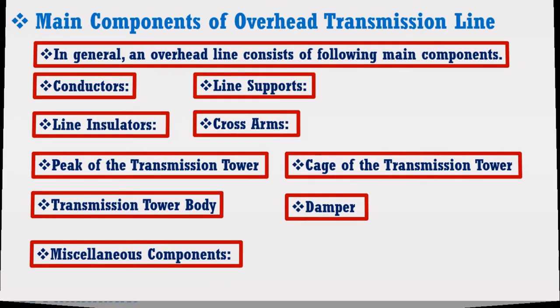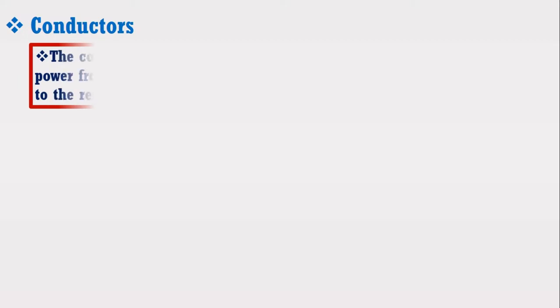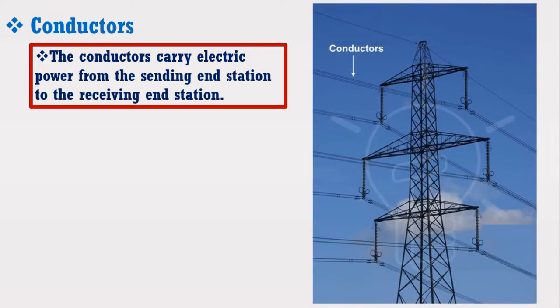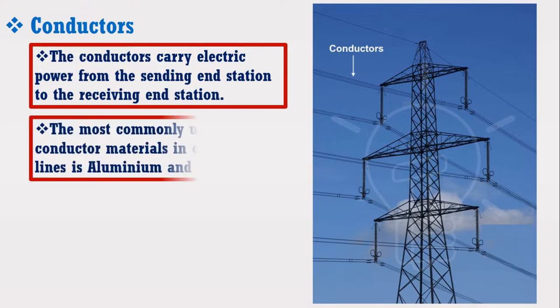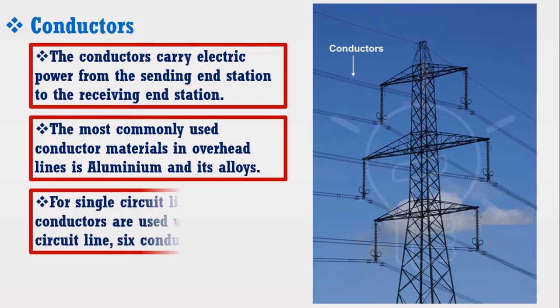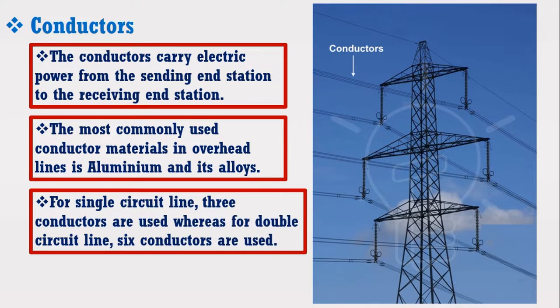First, I am going to discuss about the conductors of the overhead transmission line. The conductors in the transmission line carry electrical power from the sending end stations to the receiving end stations. Consider the figure in which the arrow shows the conductor in the transmission line. The most commonly used conductor material in overhead lines is aluminium and its alloys. For single circuit line, three conductors are used, whereas for double circuit line, six conductors are used.